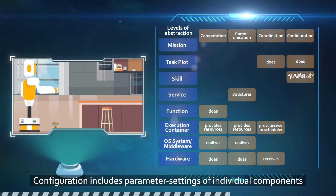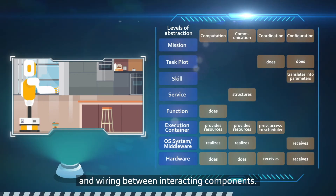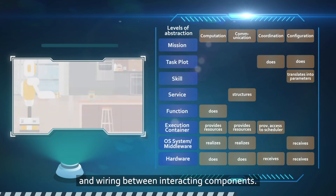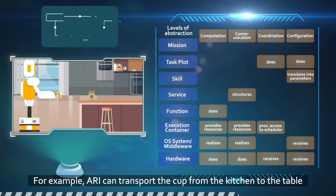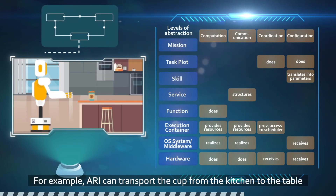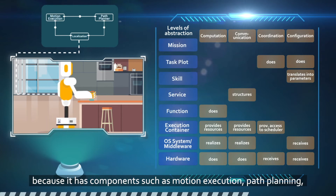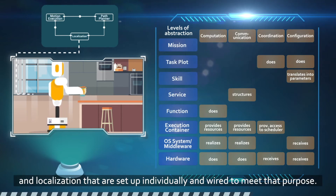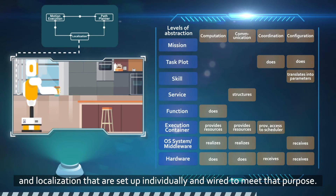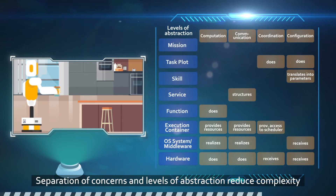Configuration includes parameter settings of individual components and wiring between interacting components. For example, Ari can transport the cup from the kitchen to the table because it has components such as motion execution, path planning, and localisation that are set up individually and wired to meet that purpose.